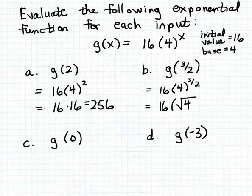So 4 to the 3 halves power is the same as 16 times the square root of 4 cubed. That denominator of that fraction becomes the index of a radical, so we have the square root of the number 4. The numerator of that fraction stays as an exponent, so we have the square root of 4 cubed. It's pretty easy to simplify the square root of 4, that's 2, and 2 cubed is 8, so we end up with 16 times 8, and 16 times 8 is 128. So g of 3 halves is 128.